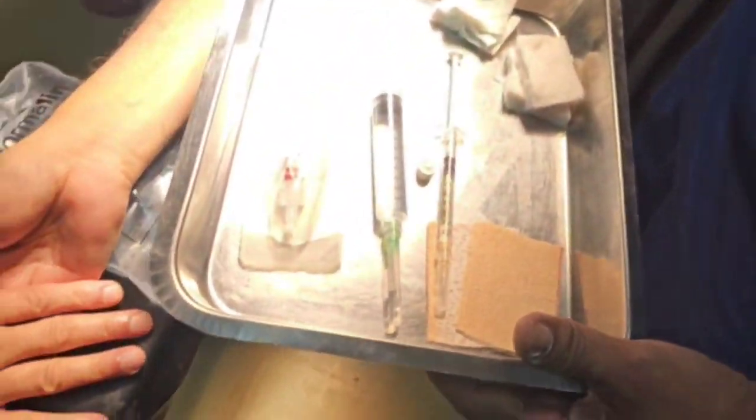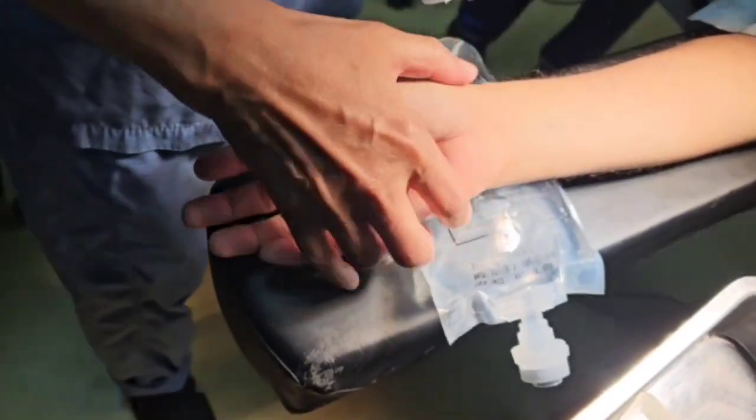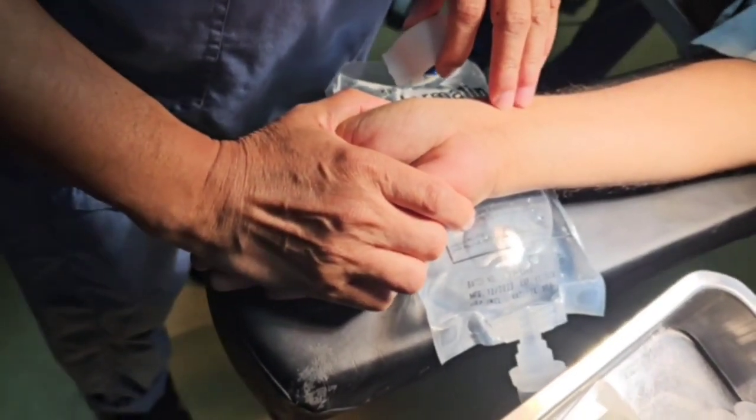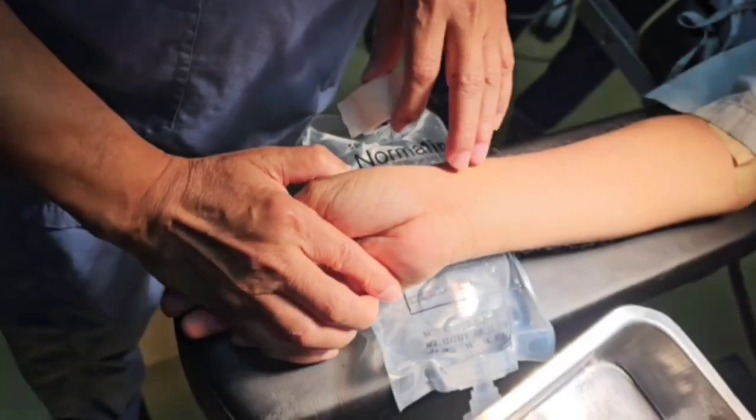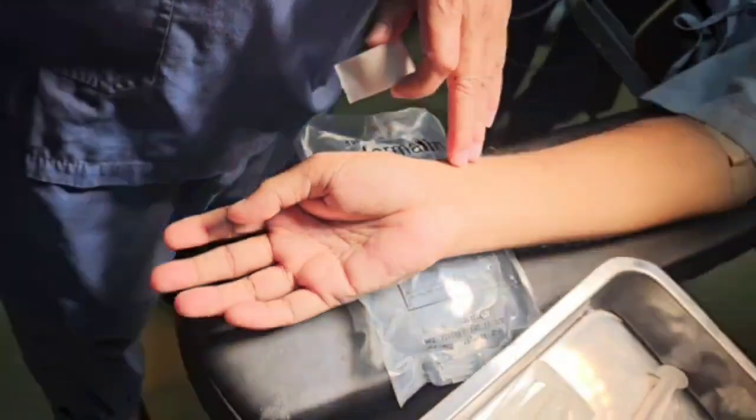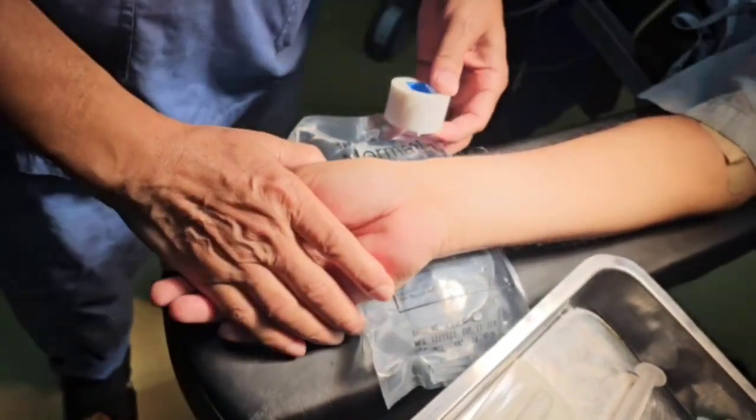Hello dear viewers, welcome to your favorite channel Organ Babu. Today we are going to talk about radial arterial line placement. For arterial line placement, we firstly need to position the forearm and wrist, then maintain the position by placing a saline bag under the wrist and securing the fingers with tape.